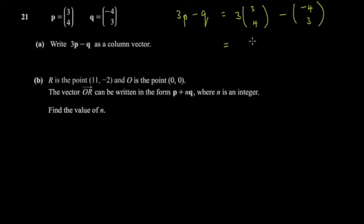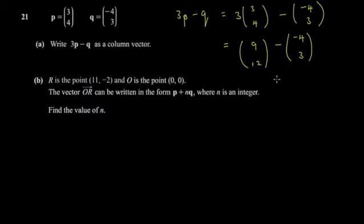After scalar multiplication you get (9, 12). Then subtracting (4, -3) gives you: 9 minus negative 4, which is 9 plus 4, equal to 13. And 12 minus negative 3, which equals 15... wait — 12 minus negative 3 equals 15, so the result should be (13, 15).